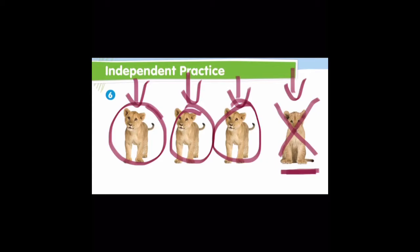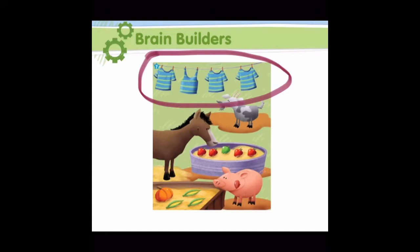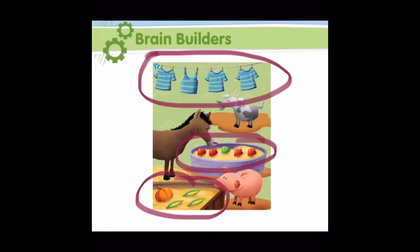Here we are going to look at the objects near each animal. We are going to put an X on the object that is different and circle the objects that are alike. On this row of objects we have shirts — which shirt is different? Good job — this shirt right here is different. It is a tank top shirt, and the rest are t-shirts.